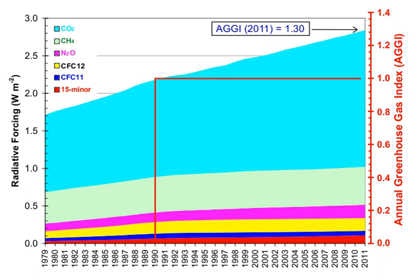Greenhouse gas intensity is a ratio between greenhouse gas emissions and another metric, such as gross domestic product or energy use. The terms carbon intensity and emissions intensity are also sometimes used. Emission intensities may be calculated using market exchange rates or purchasing power parity (PPP). Calculations based on market exchange rates show large differences in intensities between developed and developing countries, whereas calculations based on PPP show smaller differences.